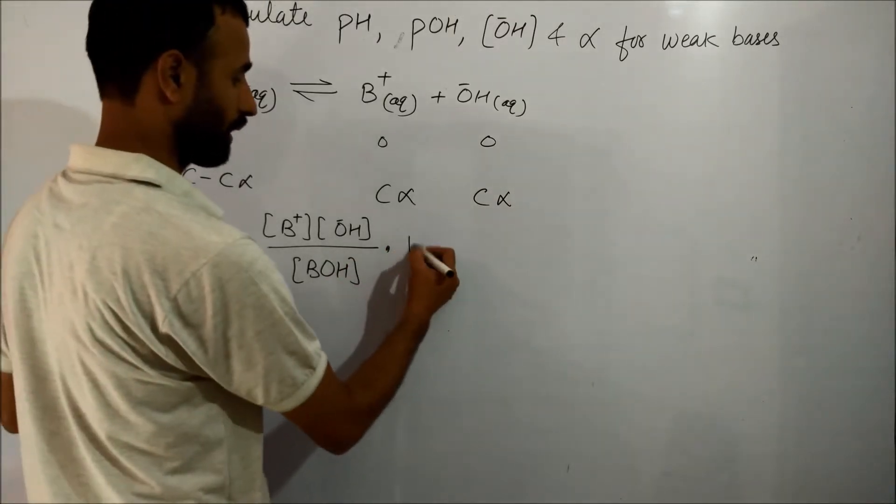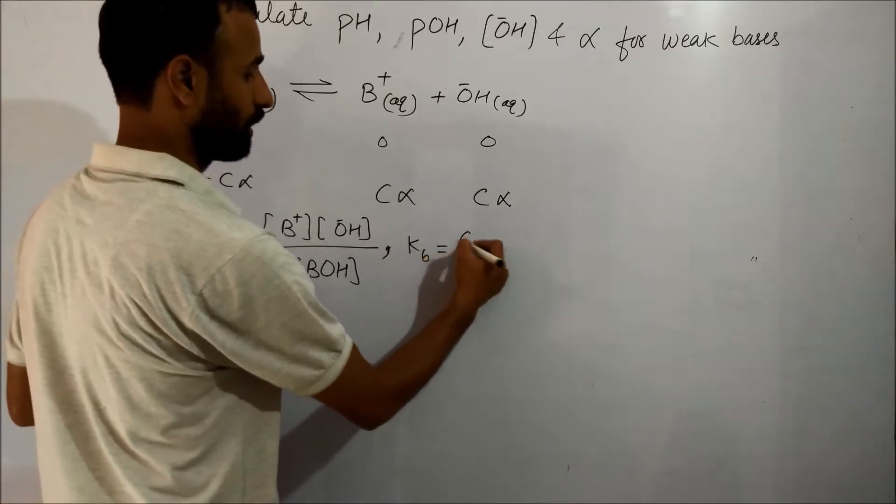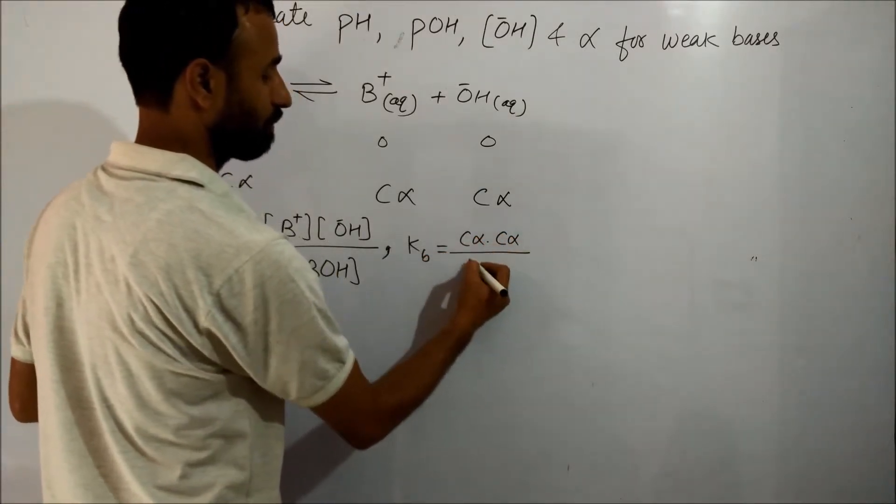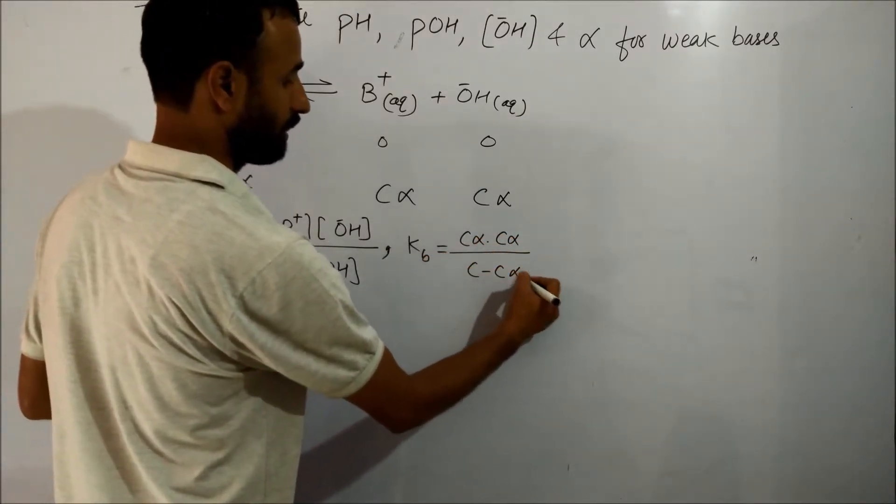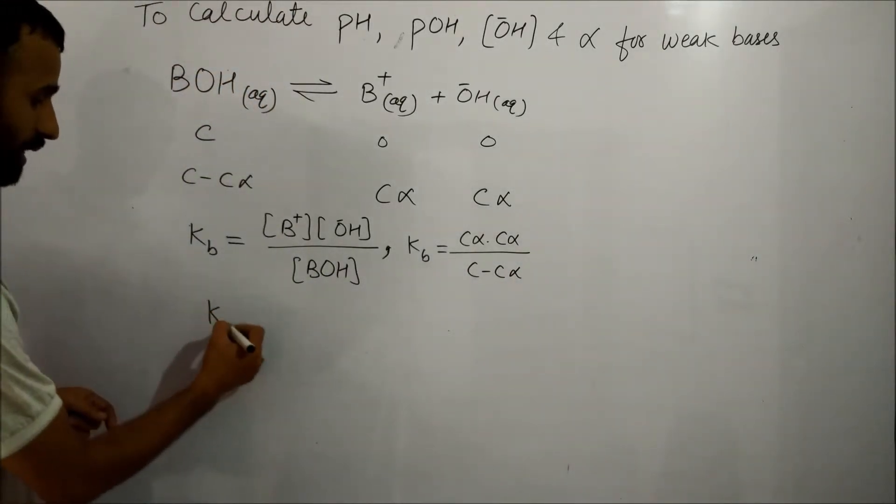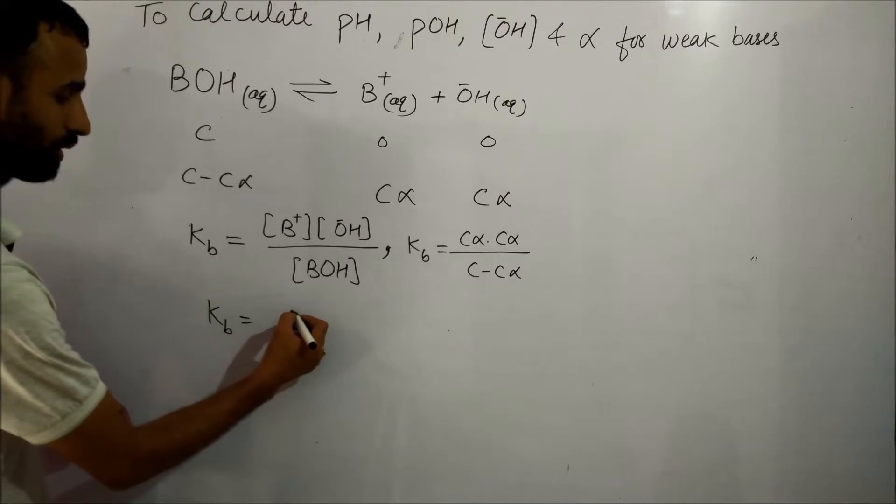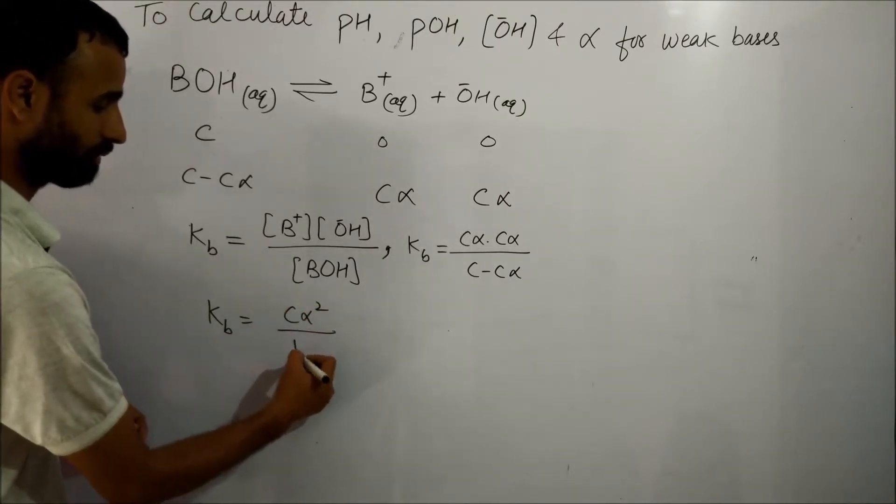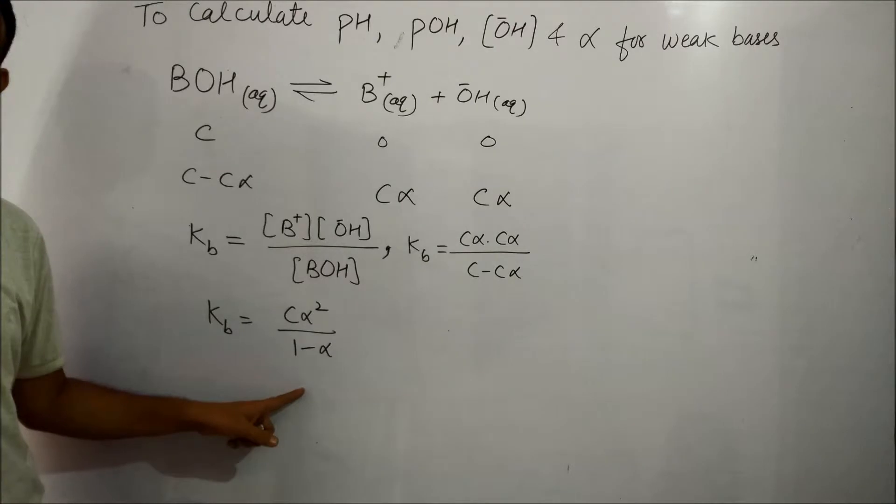So KB is equal to C alpha times C alpha divided by C minus C alpha. Therefore, KB is equal to C alpha squared divided by 1 minus alpha.